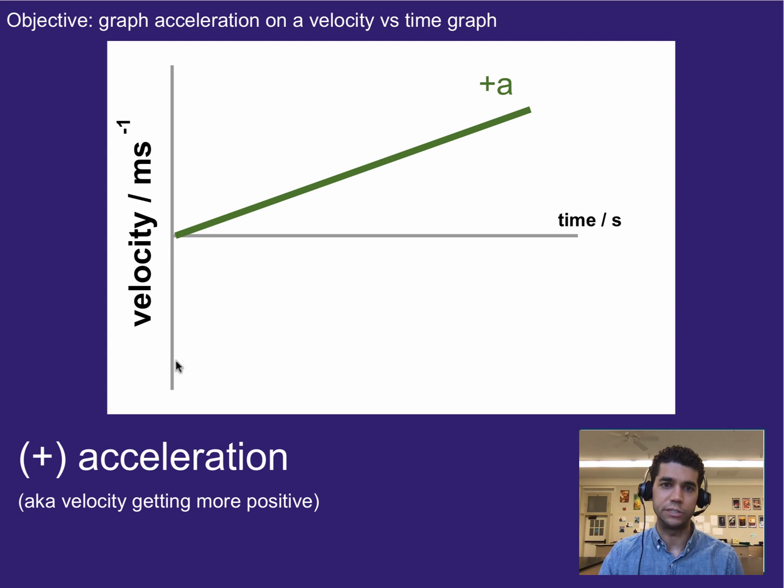So positive acceleration would be a graph that has a positive slope. And that's because the slope on a velocity versus time graph gives us the change in velocity, that's the rise, over the change in time, that's the run, which basically is the definition of acceleration. So positive accelerations, that just means to whatever the direction positive is, are always going to be upward slopes.